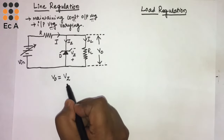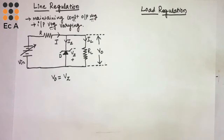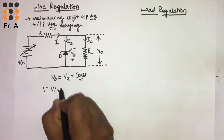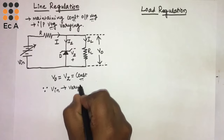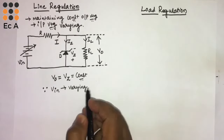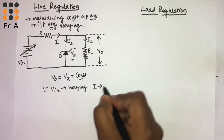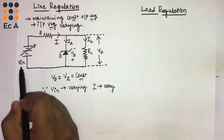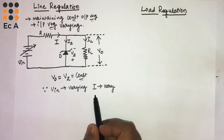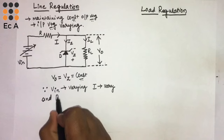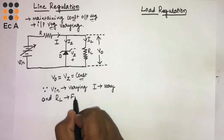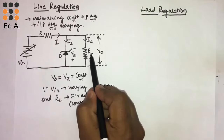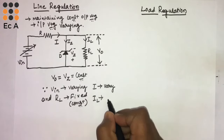To maintain the output as constant, we should maintain V-Z as constant. Since V-in is varying, the current I will also vary. R-L is fixed and constant, therefore I-L will also be constant.